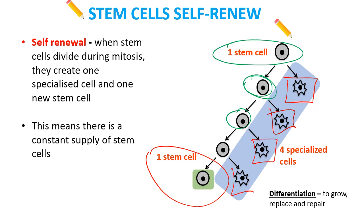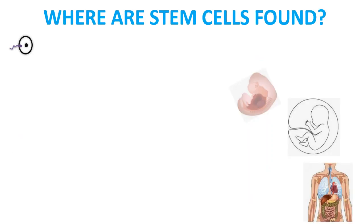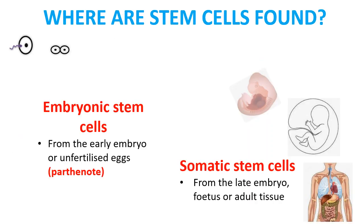At the end we've still got our one stem cell but we've made four specialized cells ready to go off and be a skin cell or do whatever they need to do. This means there's always a constant supply of stem cells for our body — so we can grow, replace tissue that is dead or past its use-by date, and repair damage.